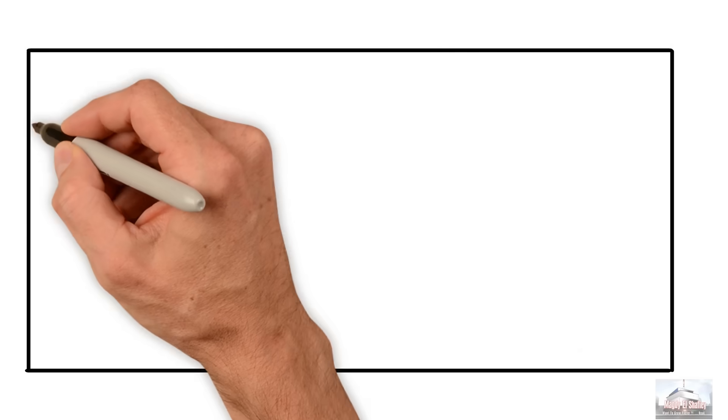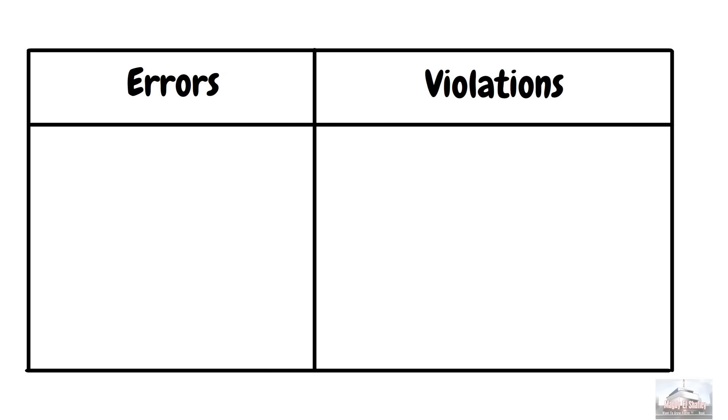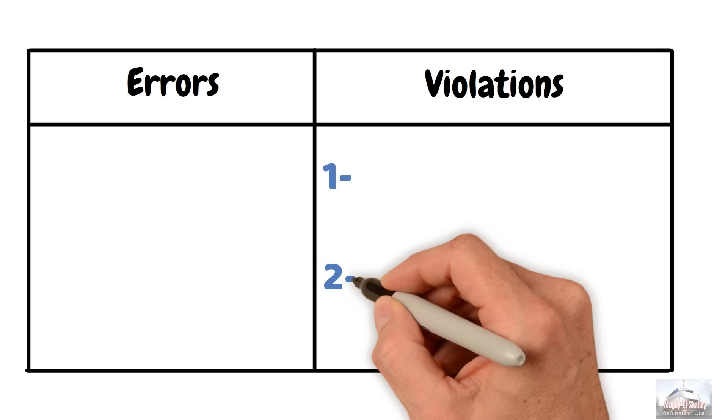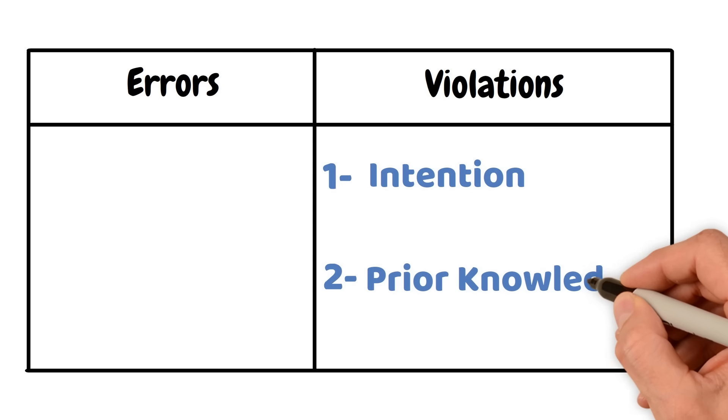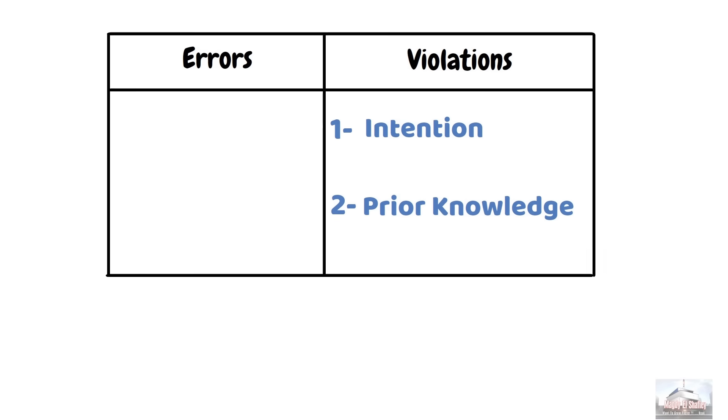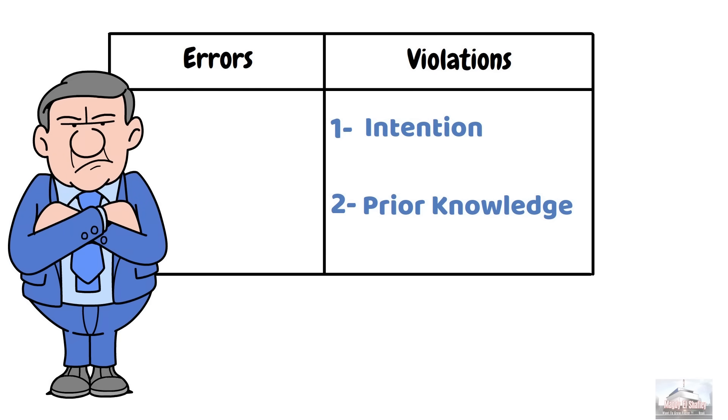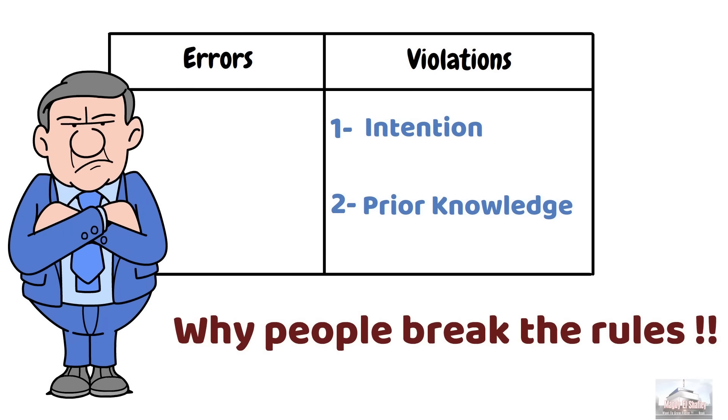The key difference between an error and a violation is that violation always meet the two conditions. One, there is some level of intention in violating the rule. Two, the person has prior knowledge of the rule that they are violating. The most important task for the management is to understand why people break the rules. This is the key to develop effective corrective actions.